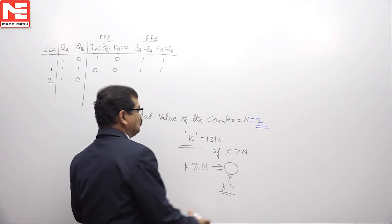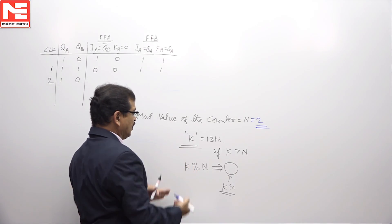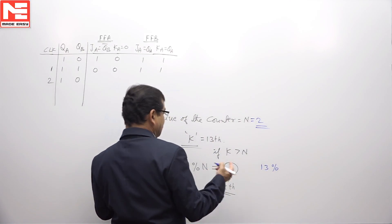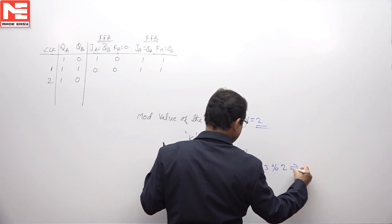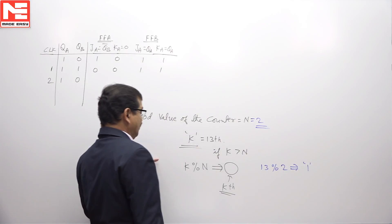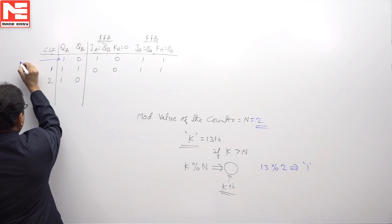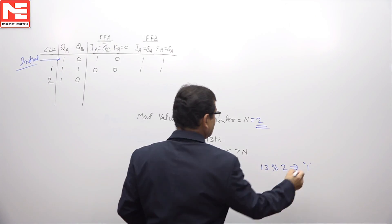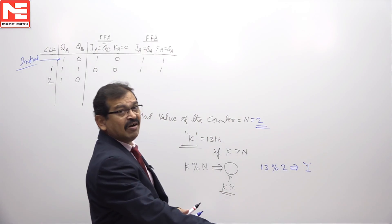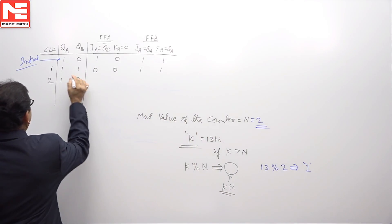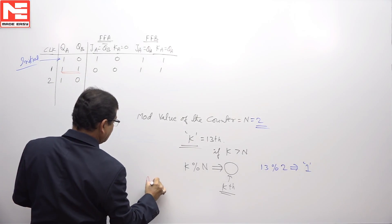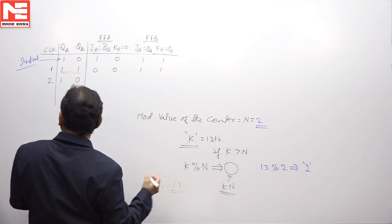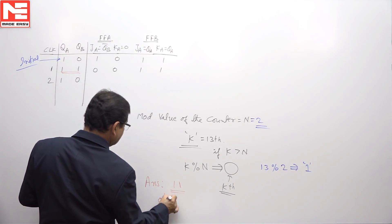Since the mod value is 2, we apply the formula: 13 remainder 2 equals 1. Starting from the initial state 1,0, we need the content of the counter after the 1st clock pulse. After the first clock pulse, the content is 1,1. Therefore, the answer to this question — the content after the 13th clock pulse — is 1,1, which corresponds to option C.